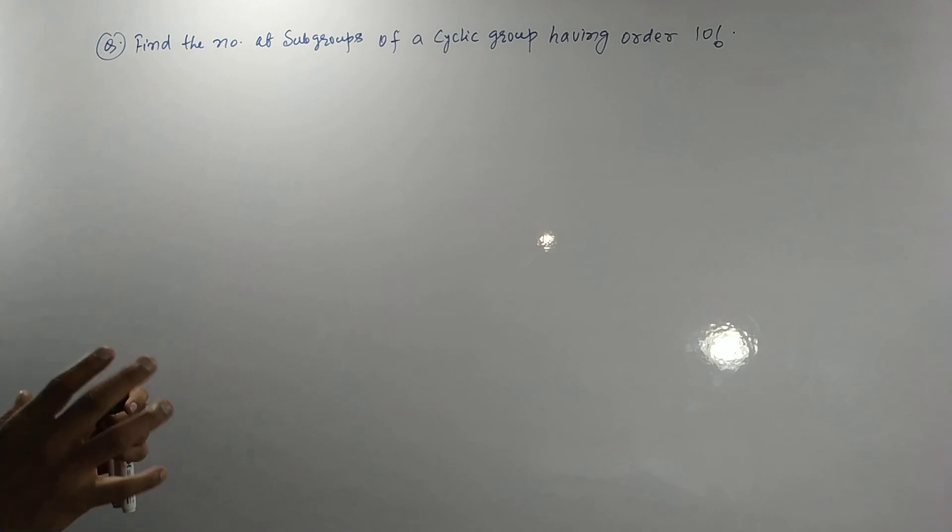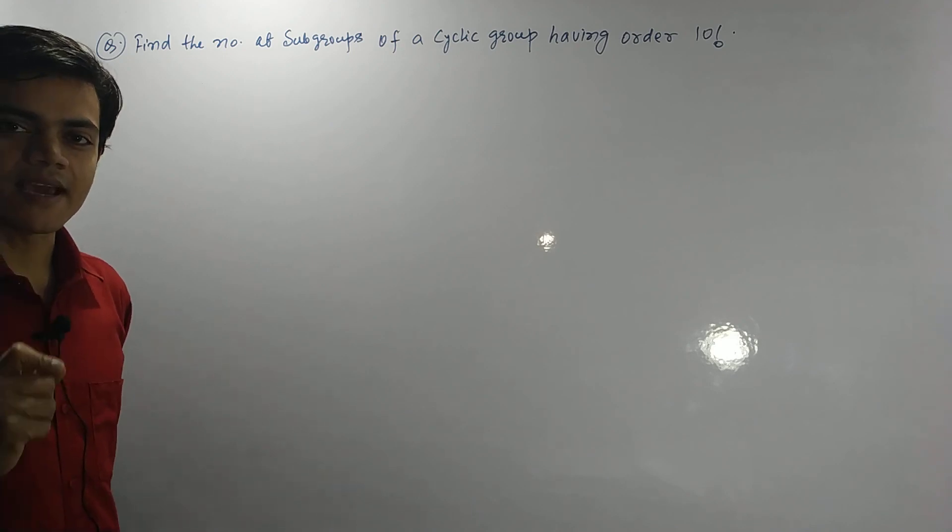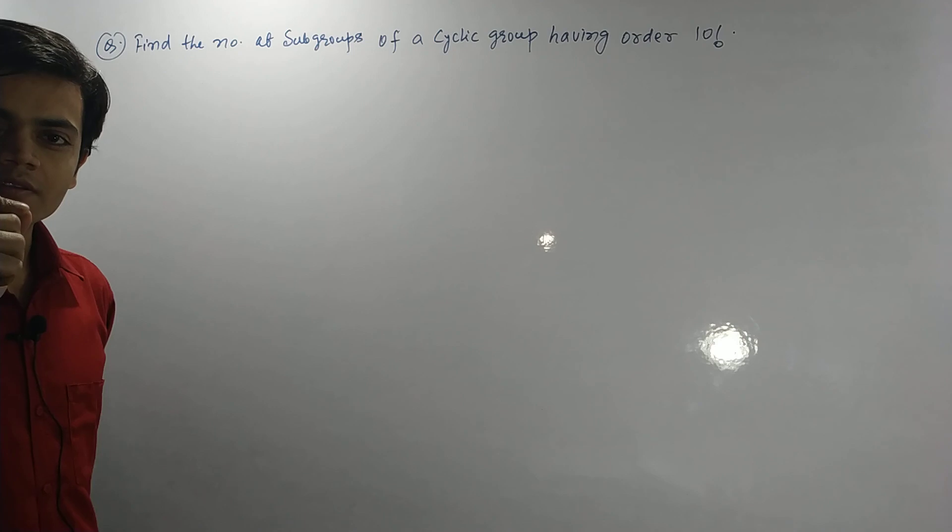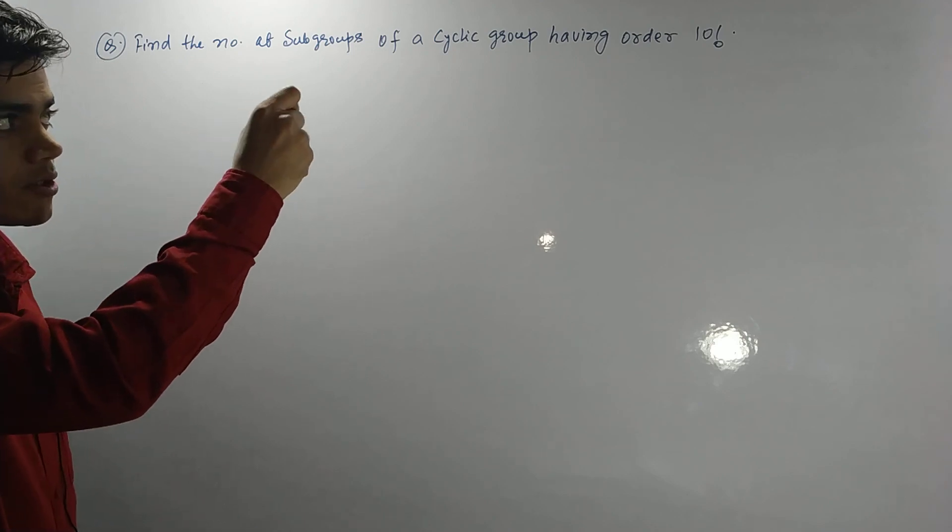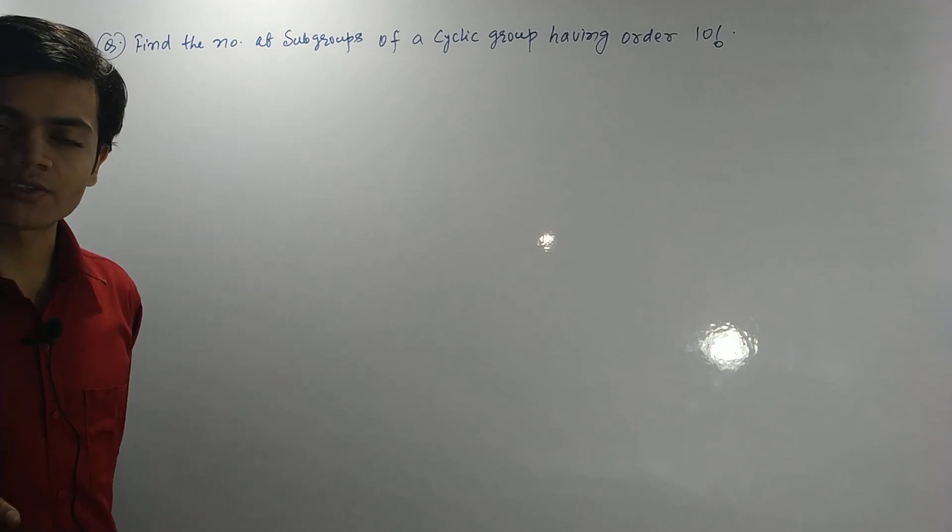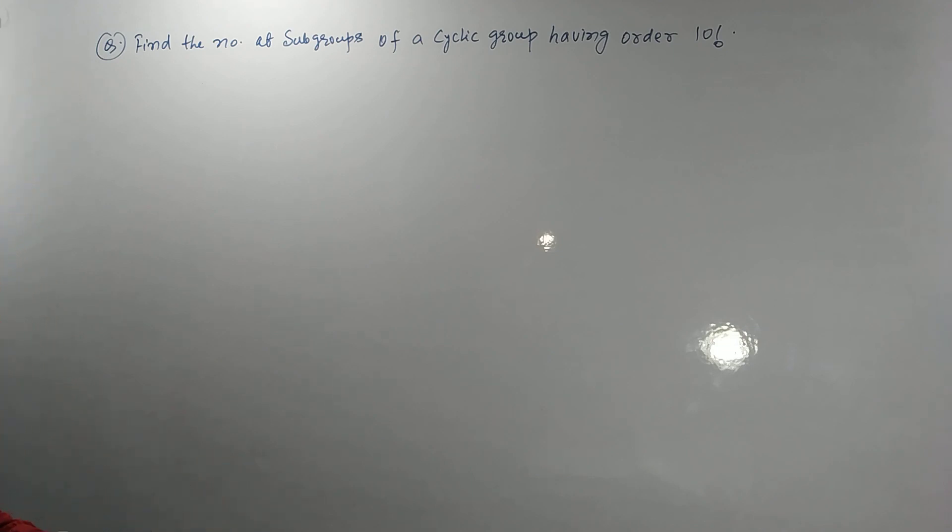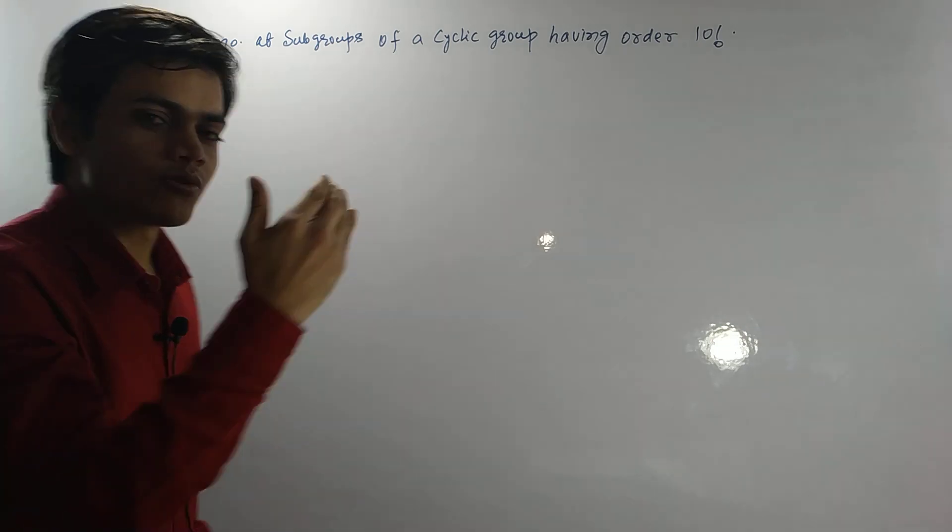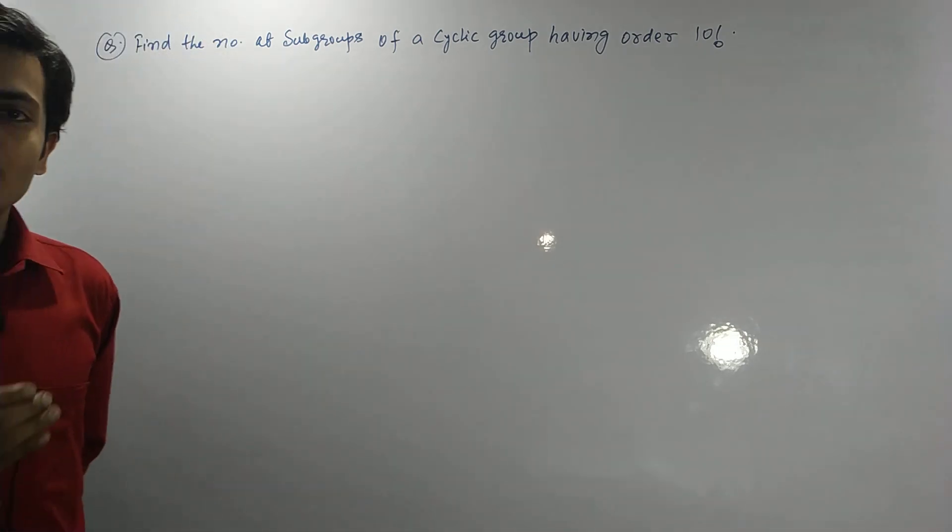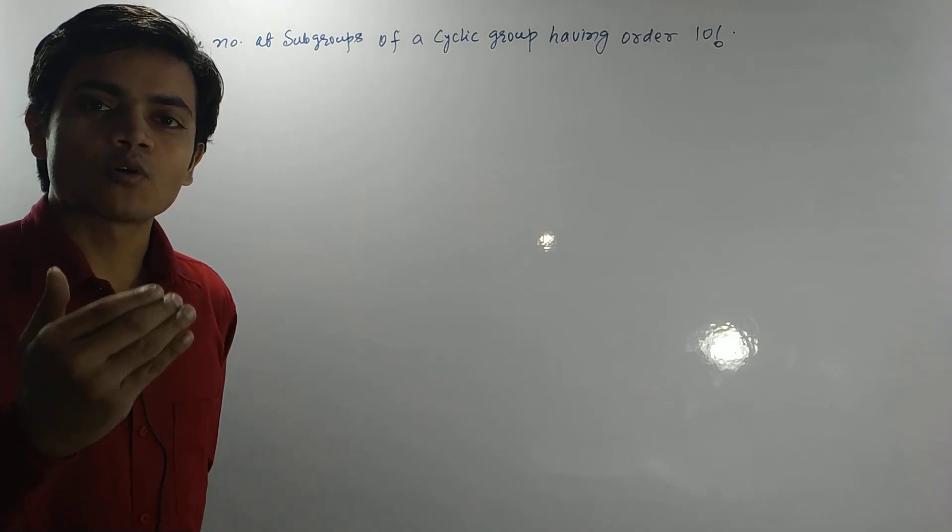To find the number of subgroups of this cyclic group having number of elements of 10 factorial, we need one thing. We have to find the prime factors of 10 factorial. That means, how can we write 10 factorial as the product of prime powers?